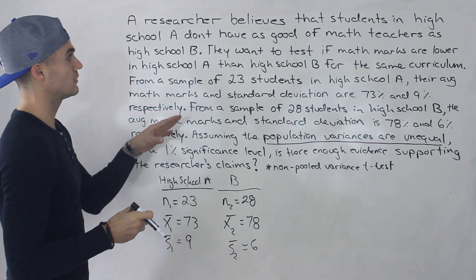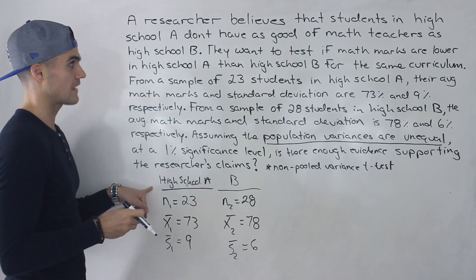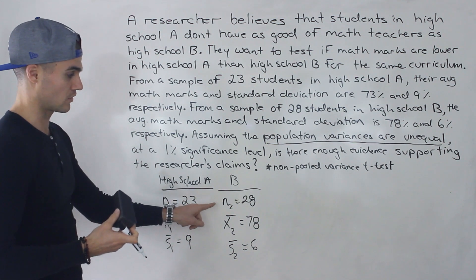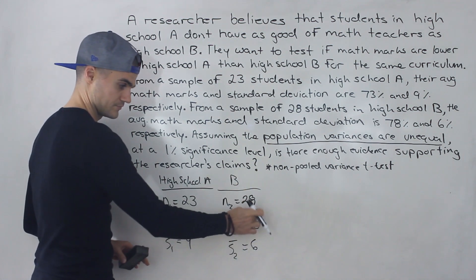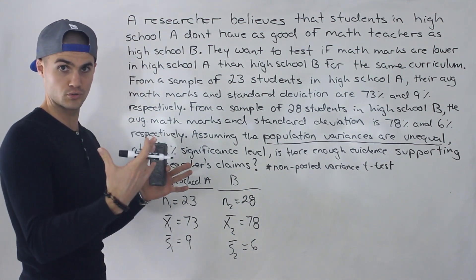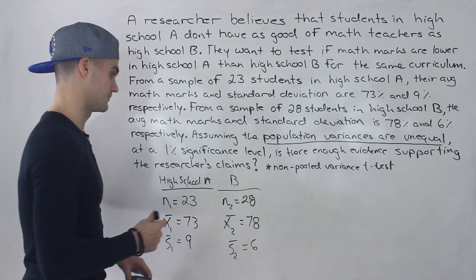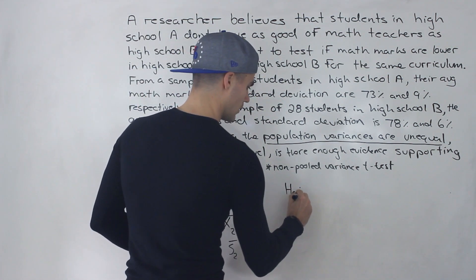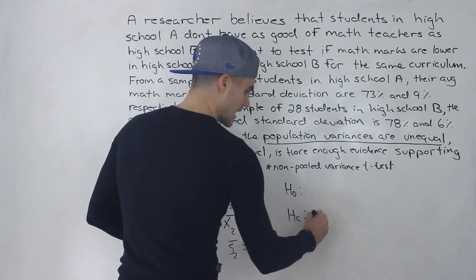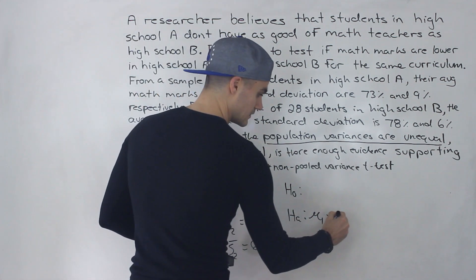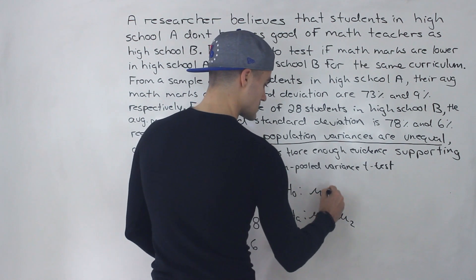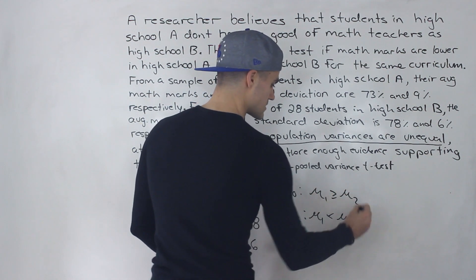The researcher is saying they don't believe students in high school A have as good math teachers as high school B. So we're testing if the math marks in high school A are lower than those in high school B. From the sample, math marks are higher for high school B, but we have to test whether there's enough evidence that this is true for the whole population. The alternative hypothesis is that mu1 is less than mu2, and the null hypothesis is mu1 greater than or equal to mu2.